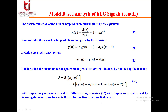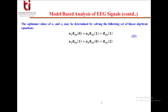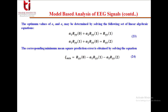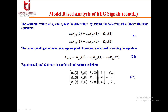The optimum values of a₁ and a₂ are determined by solving a set of linear algebraic equations: a₁·R_yy(0) + a₂·R_yy(1) = R_yy(1), and a₁·R_yy(1) + a₂·R_yy(0) = R_yy(2). The corresponding mean square prediction error from equation 24 is R_yy(0) - a₁·R_yy(1) - a₂·R_yy(2). These equations can be written and solved in matrix form to calculate the minimum mean square error.